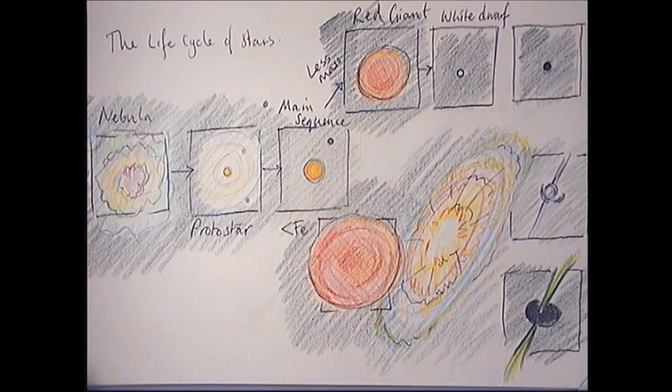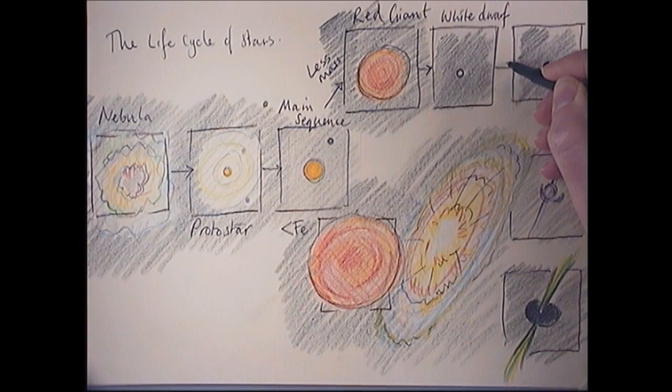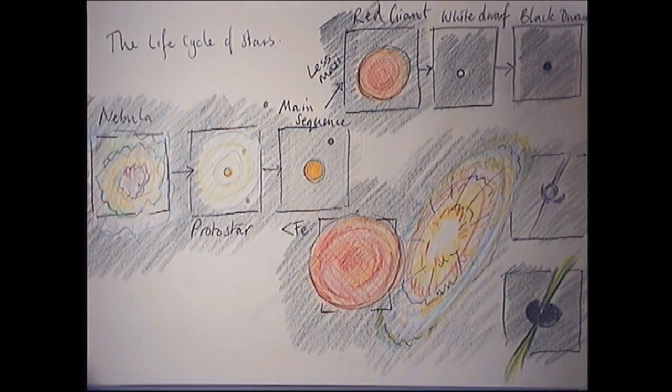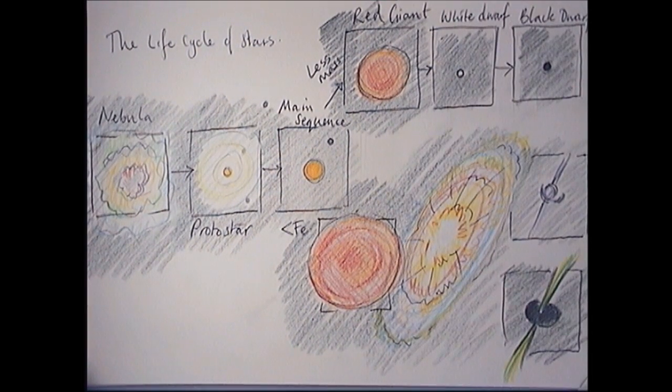White dwarf. Still a little bit of fusion going on, still a little bit of heat coming out, still a bit of light. It looks white in the night sky. And eventually all that fusion stops and you get, you guessed it, a black dwarf. So smaller than the original star and no light coming out of it. So black.